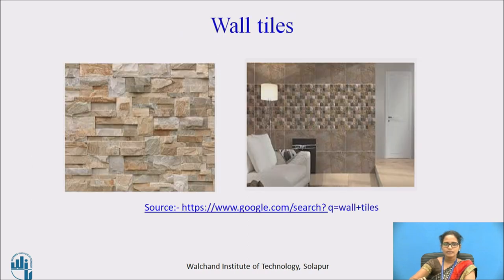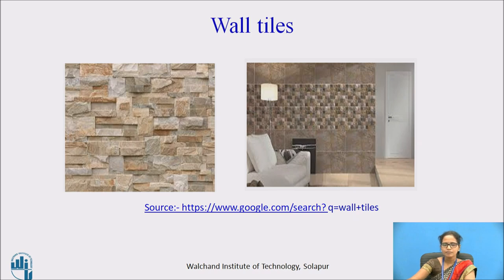These are the wall tiles. The tiles which are laid on the walls are called wall tiles. They can be used inside and outside the buildings. Inside the buildings, you can use them in the bathrooms and the kitchens, and also in dining rooms or other places in your flat. Ceramic tiles are the most common type used inside buildings, but you can also go for granite, rustic tiles, and marble. Outside the building, they are used for protection, decoration, and architectural design purposes.